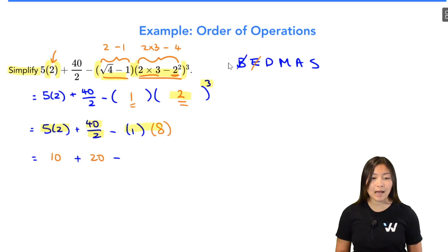And then finally, I have a last multiplication right here. So I have 1 times 8. That's going to be an 8.